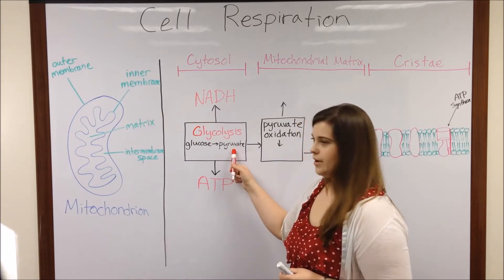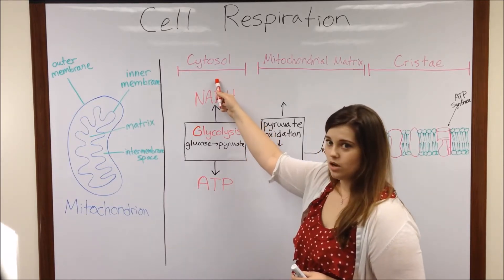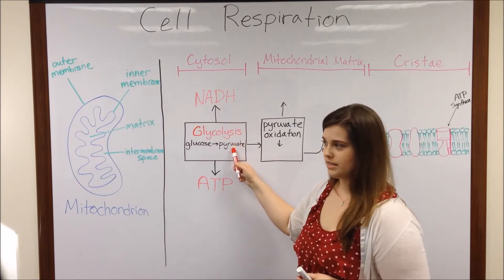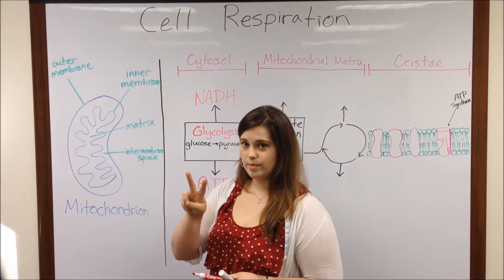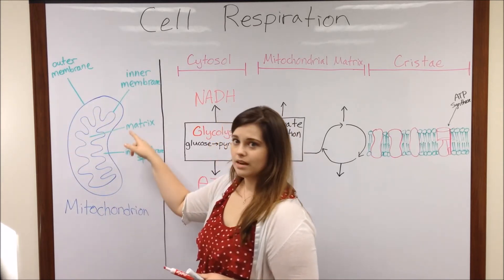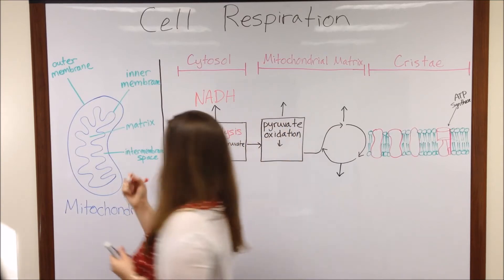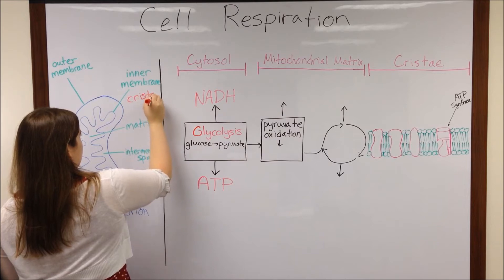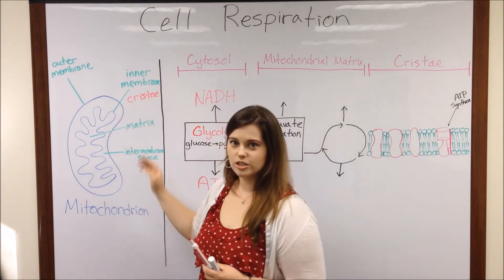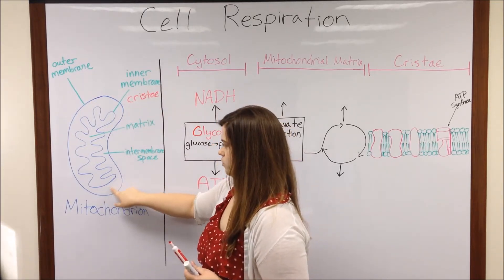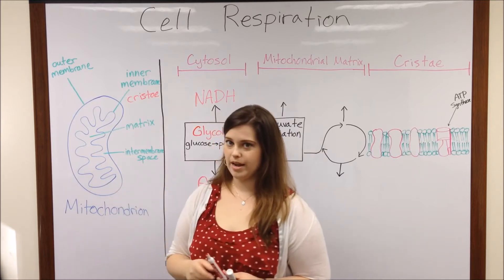That is when pyruvate enters the mitochondrion. The product of glycolysis, which happened in the cytosol, now has to enter the mitochondrion, which is one of the organelles. The mitochondrion is made up of two membranes: an outer membrane and an inner membrane, which has all of these folds called cristae. The space between the outer and inner membrane is known as the intermembrane space, and then there is the mitochondrial matrix, which is what is inside the inner membrane.